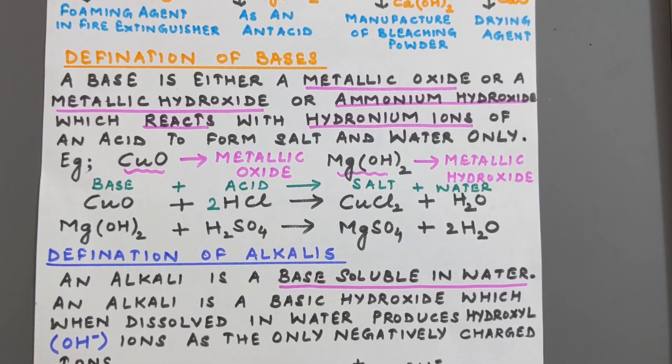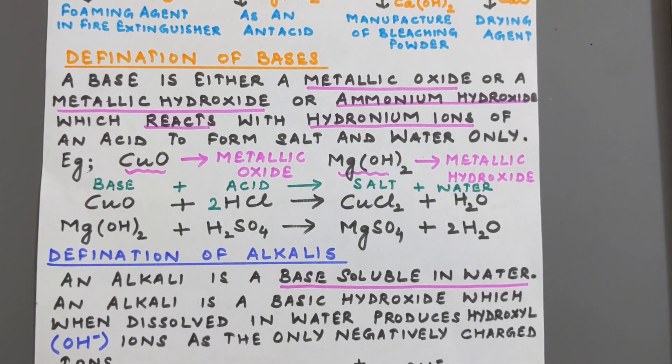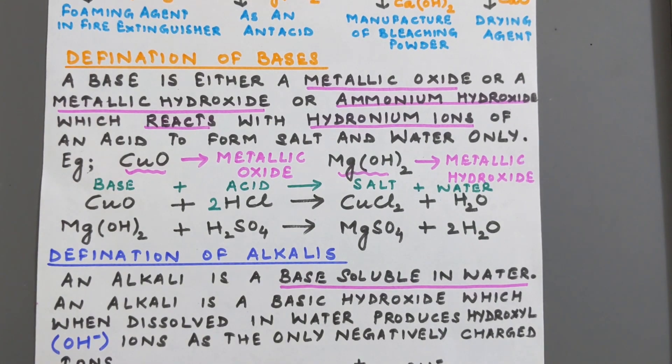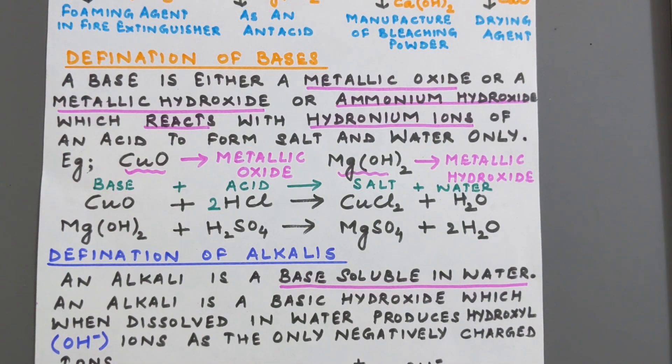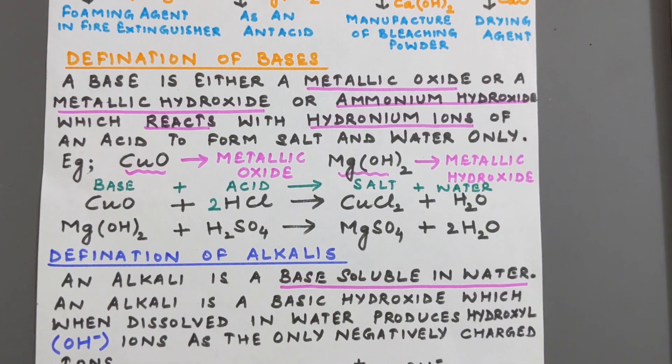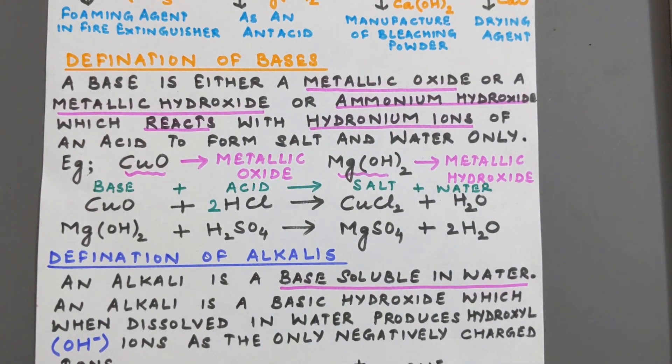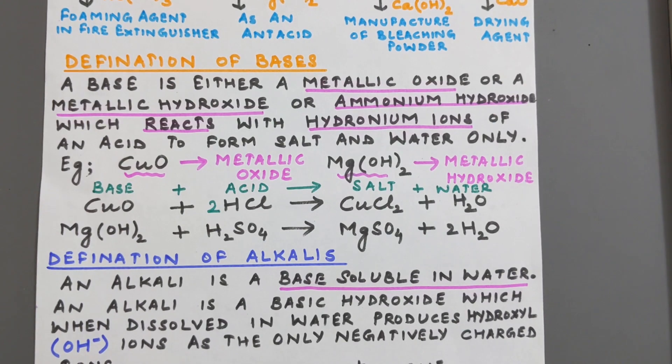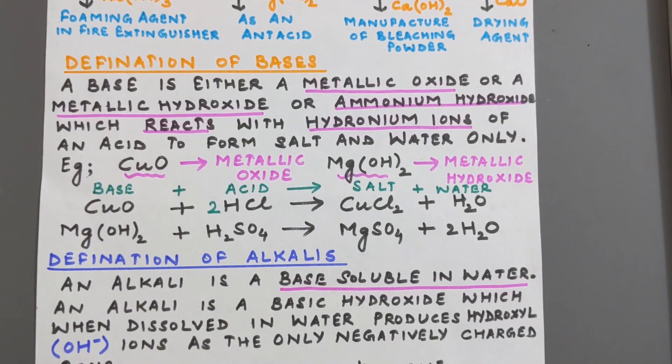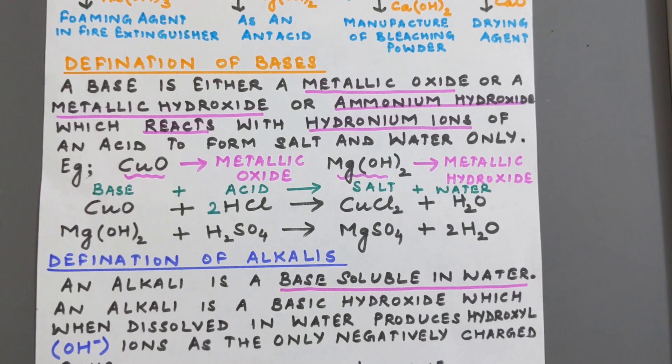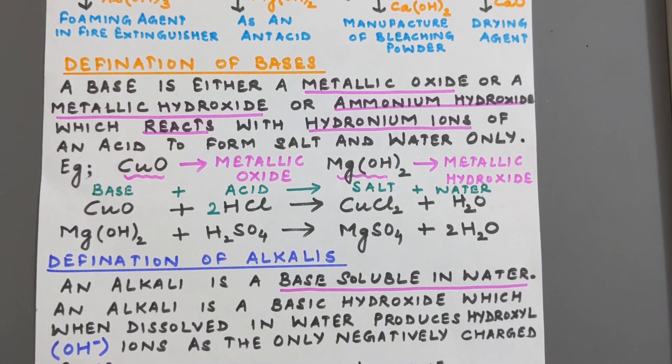Let us now do the definition of bases. So what is a base? A base is either a metallic oxide or a metallic hydroxide or ammonium hydroxide which reacts with hydronium ions of an acid to form salt and water only.